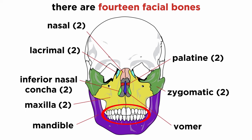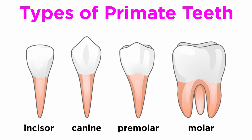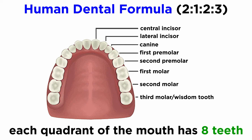The mandible and maxilla house the teeth, which are not considered to be bones, but are important to know about. Humans, like all primates, have four types of teeth defined by their cusping: incisors, canines, premolars, and molars. The human dental formula is the same as all catarrhine primates — two to one to two to three — indicating that in each quadrant of the mouth we have two incisors, one canine, two premolars, and three molars. The most posterior molars, the wisdom teeth, cause crowding in some humans and must be removed.